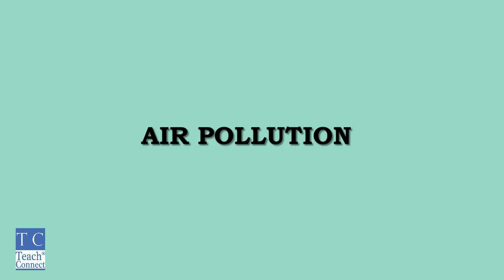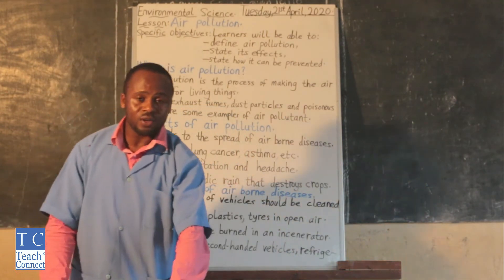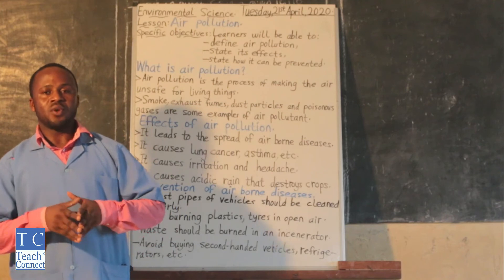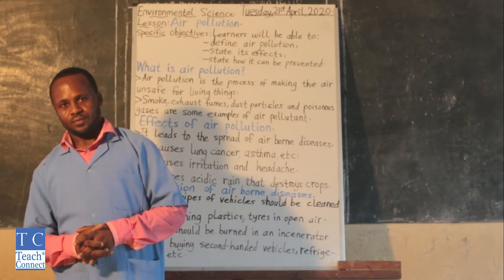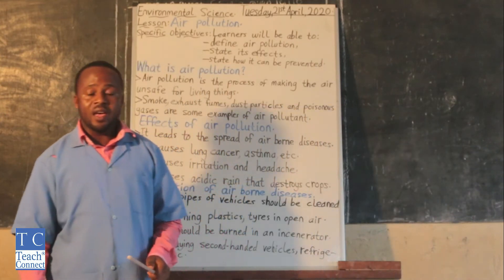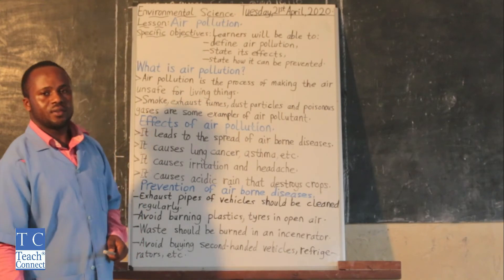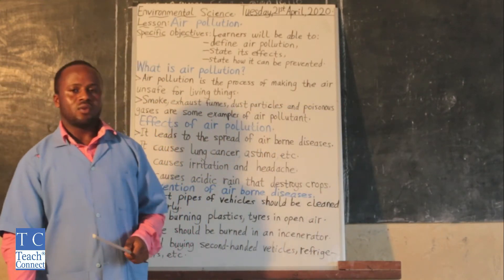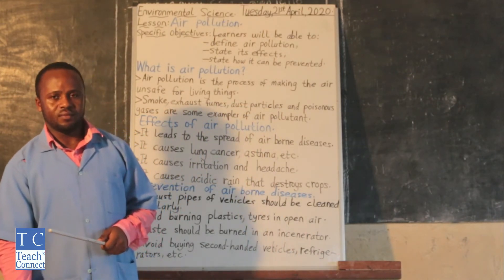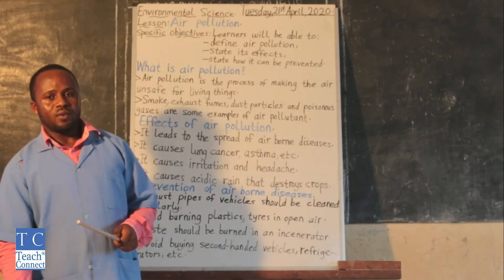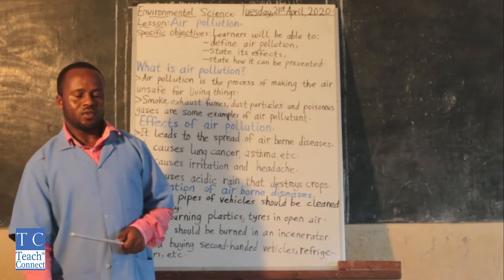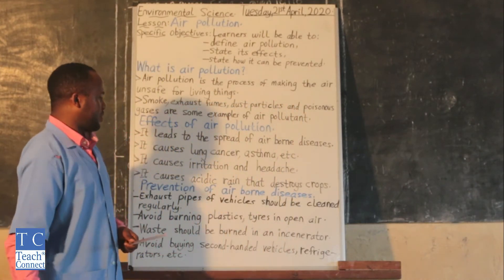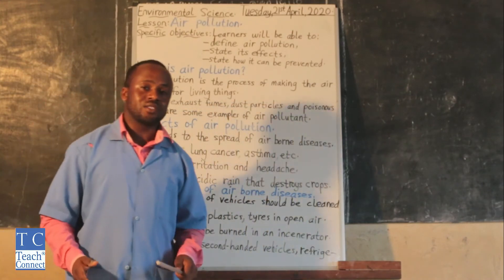Before we continue with air pollution and the objectives, I would love us to name some of the ways through which we can prevent air pollution. How can we prevent air pollution? We should avoid burning bushes. We should avoid using second-hand vehicles. So these are some of the ways through which we can prevent air pollution.